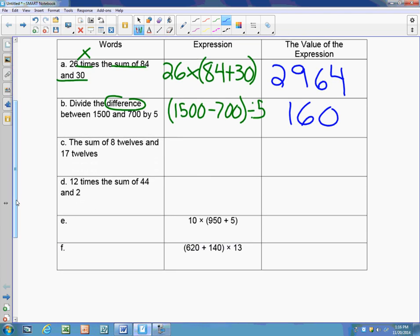The next is another one with the sum and it says to take the sum of 8 twelves and 17 twelves. Sum tells me to add. When I have 8 twelves or 17 twelves that's multiplication. So I have to do 8×12 and 17×12. I want to find the sum of them so I'm adding them together. I have to do 12 times 8 which is 96, and then 17 times 12 which is 204. When I add 96 plus 204, I get 300.